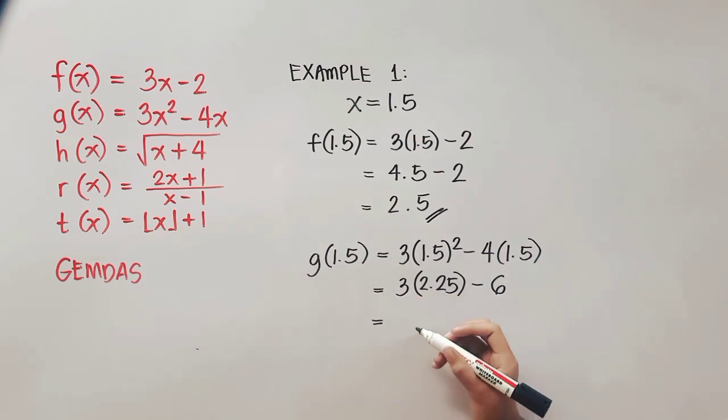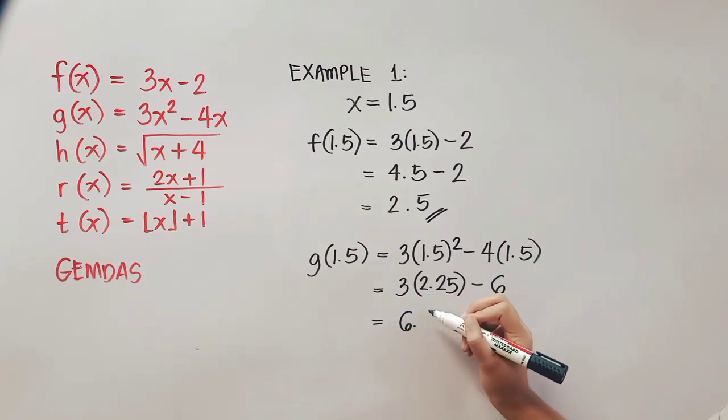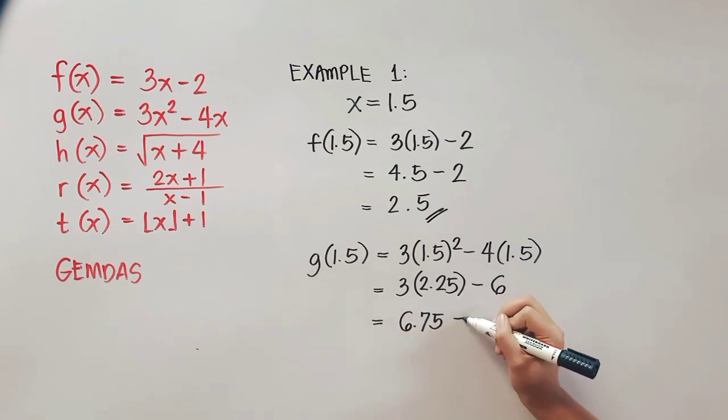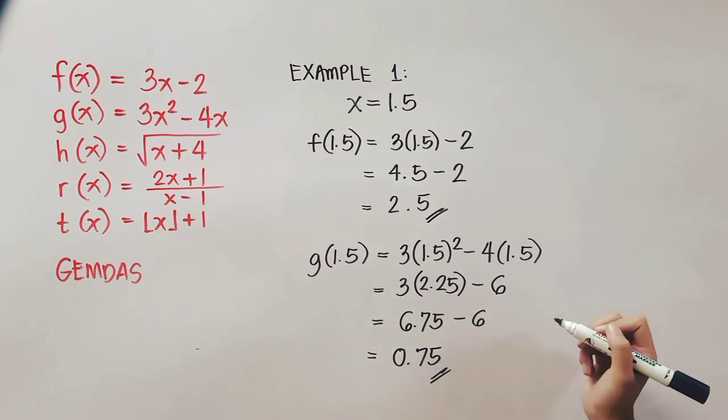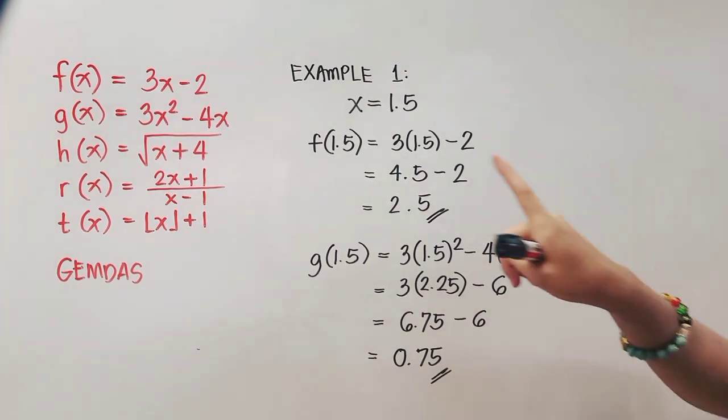So this will give us 6.75, then copy minus 6. So performing that one, it will give us a final answer of 0.75.